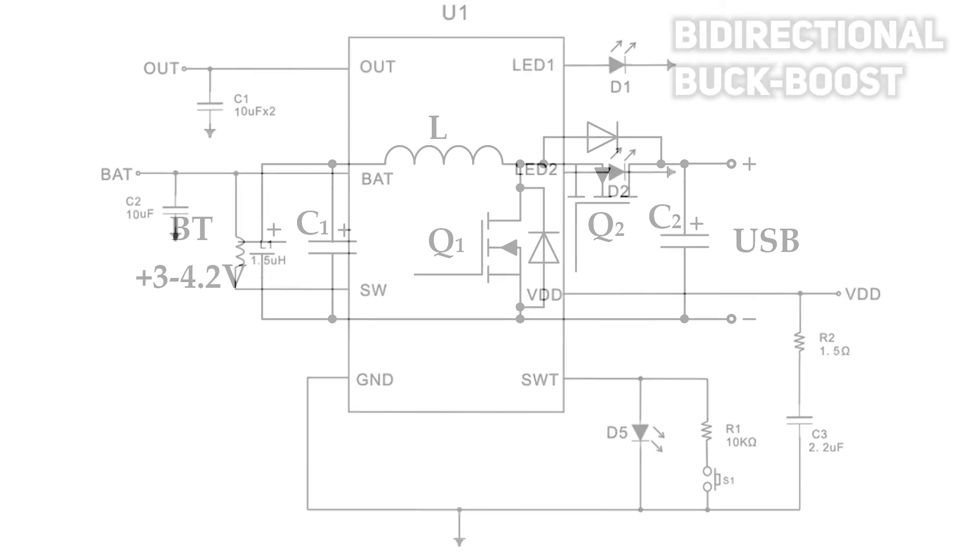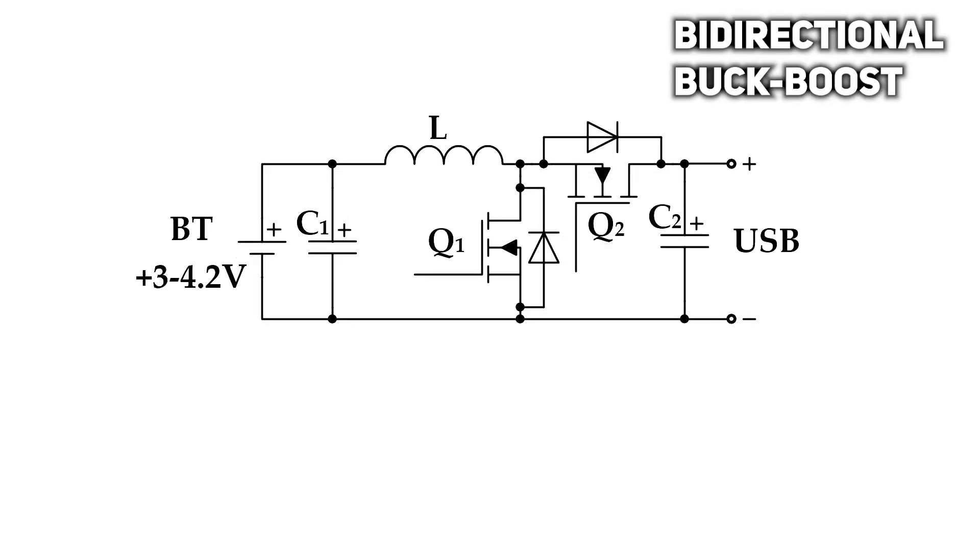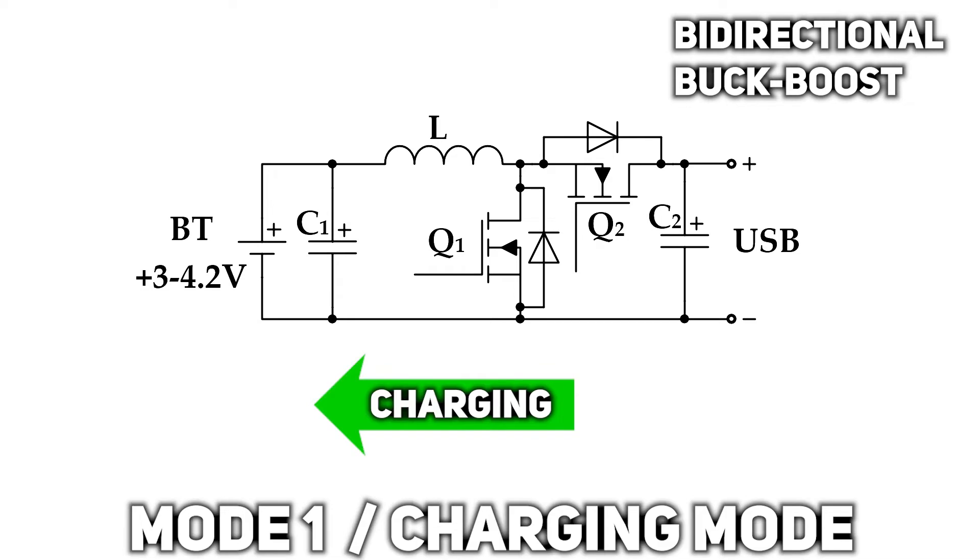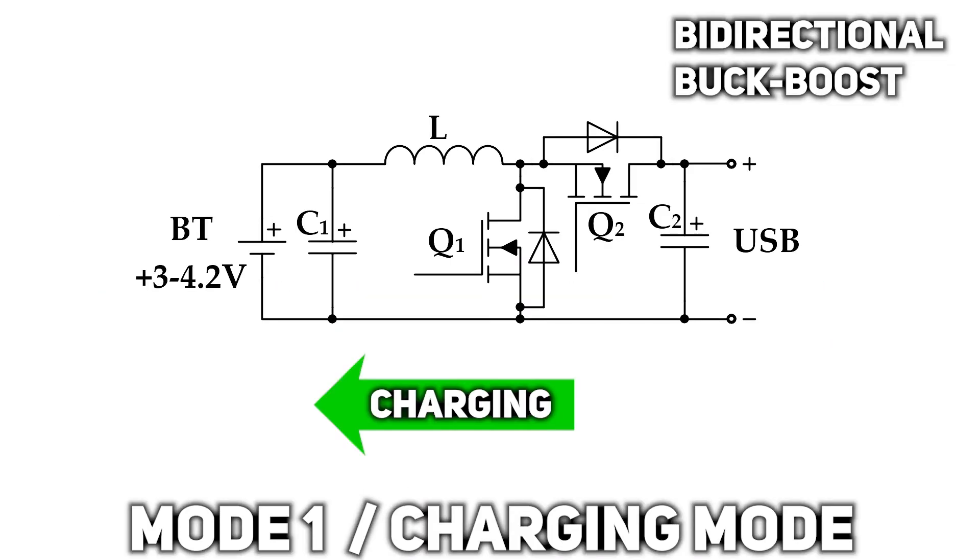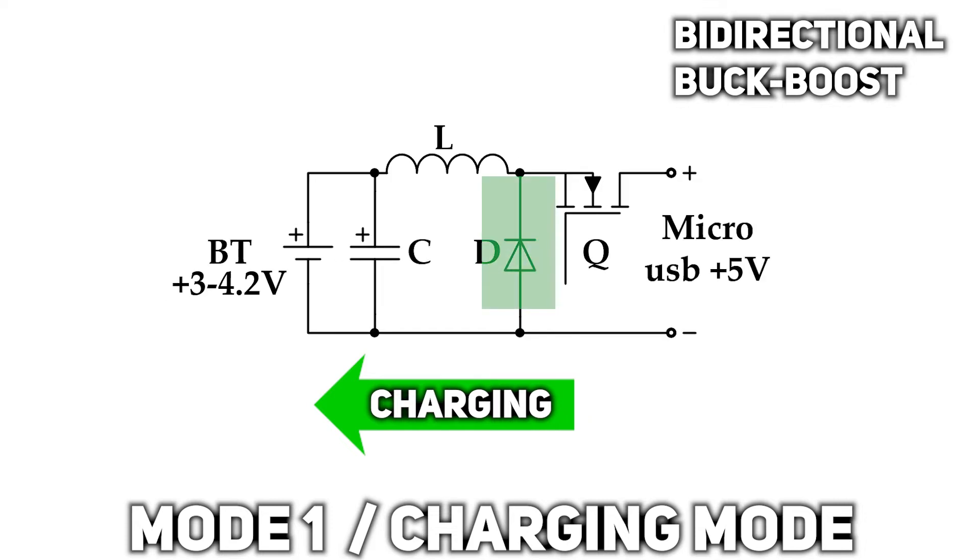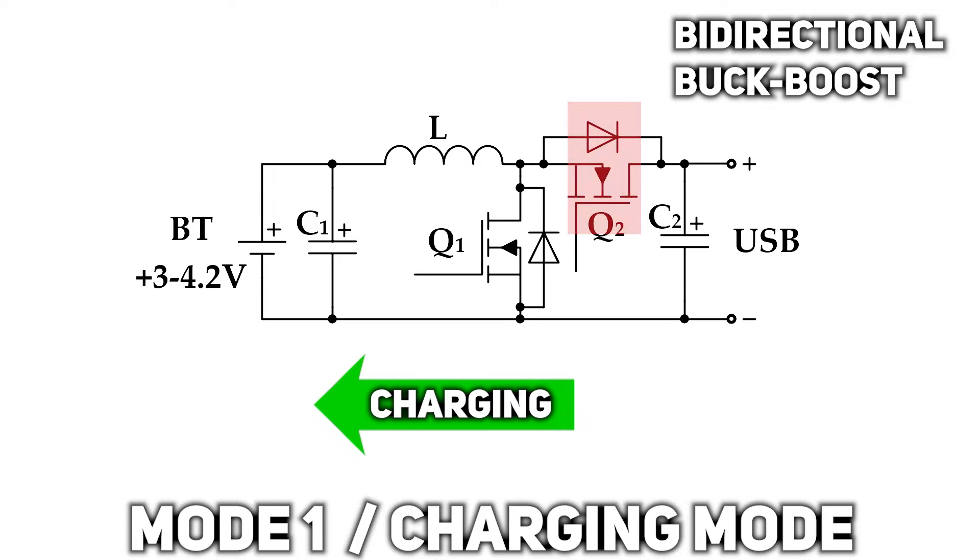So, one more time, how this buck boost works? When operating in battery charging mode or buck mode, transistors are switching alternately. To be more specific, this one works as a diode, if we compare it to classical buck converter scheme, and this one is turned on and off, and the difference between on and off state regulates voltage.